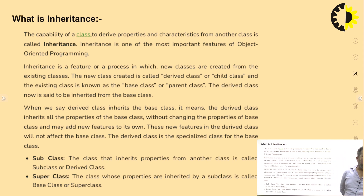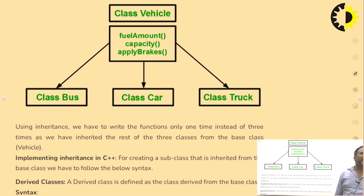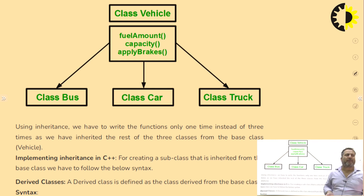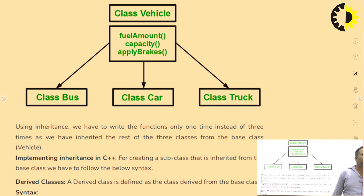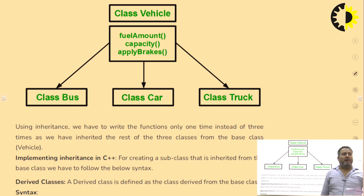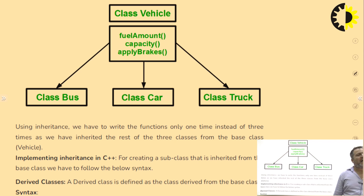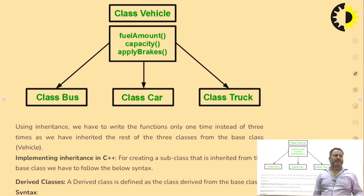The terminology here is subclass or superclass — superclass is called parent class, subclass is the new or derived class. For example, a class Vehicle is a parent class, and Bus, Car, and Truck could be its subclasses. Bus, Car, and Truck would each have their own exclusive properties, but all three would also share the properties of class Vehicle. By creating the object of any one — Bus, Car, or Truck — we could access the members of class Vehicle too, such as fuel amount, capacity, and apply brakes.